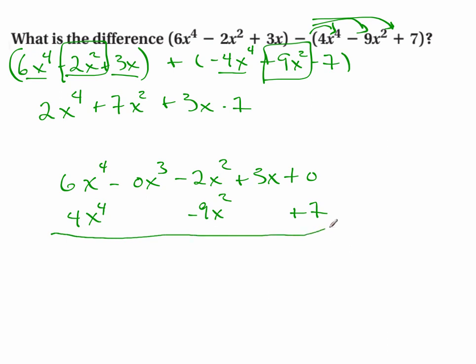Now I'm going to subtract. So to subtract, I'm going to go in and change all the signs. And now I add straight down. So this is 2x⁴ + 7x² + 3x - 7. Same answer.